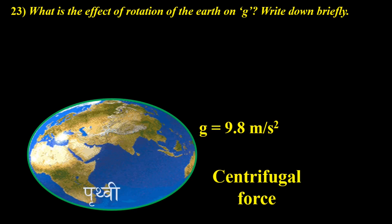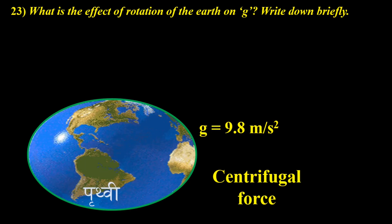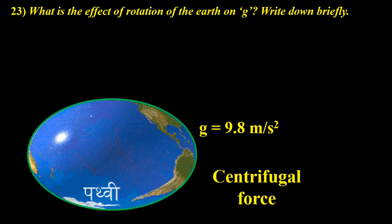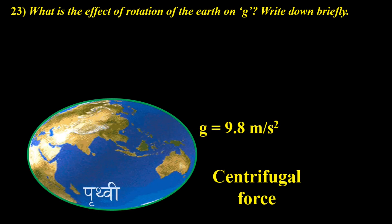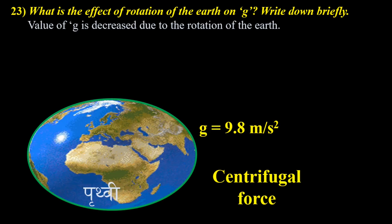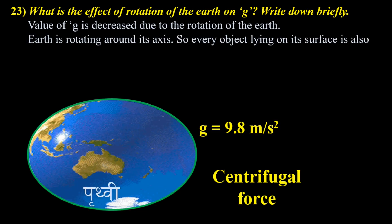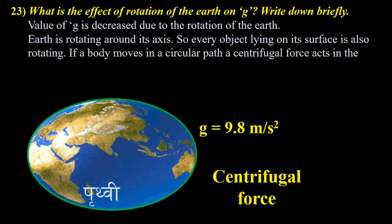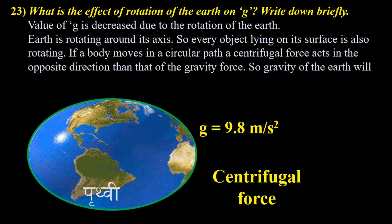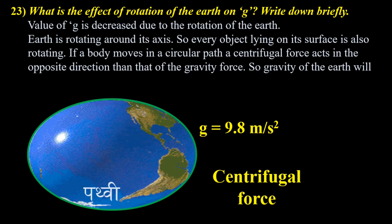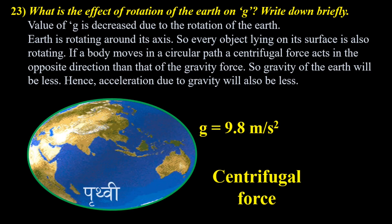If Earth was not rotating around its axis, the gravity on the object lying on its surface would be more, and certainly small g would also be more. The value of g is decreased due to the rotation of the Earth. Earth is rotating around its axis, so every object on its surface is also rotating. A centrifugal force acts in the opposite direction to that of the gravity force, so gravity of the Earth will be less. Hence, acceleration due to gravity will also be less.